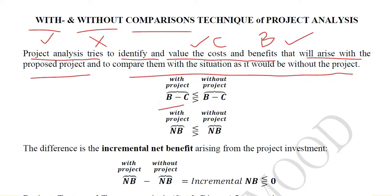We are talking about the difference of benefits and costs — just like B minus C in arithmetical terms — in the case of the presence of the proposed project, and also the difference of benefits and costs in the case of the absence of the project. The comparison can show the first value to be greater, equal, or lesser than the second — those are the three possibilities.